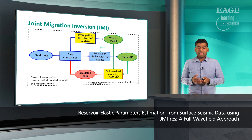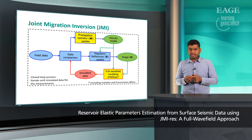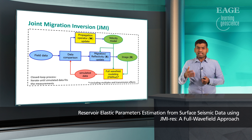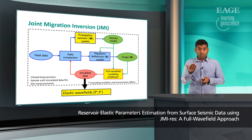This flowchart depicts JMI. In JMI, we start with an initial guess of velocity model and reflectivity image, then simulate the data using full wave field modeling. Using the data residual, we invert the image and velocity model in a flip-flop manner. As we model the wave fields in the subsurface every iteration, we have the elastic wave field available as a byproduct for our JMI-RIS process.